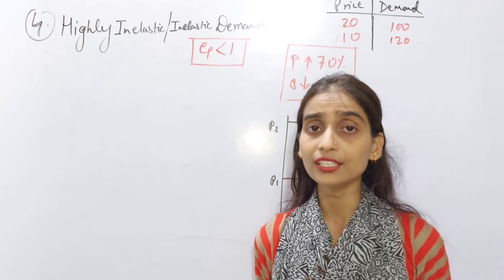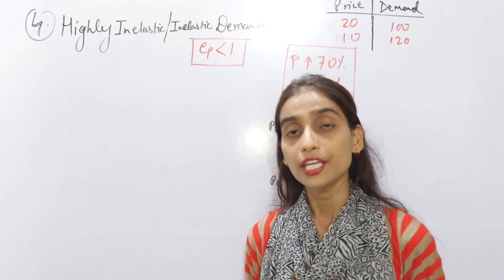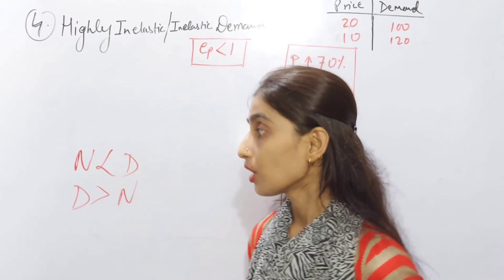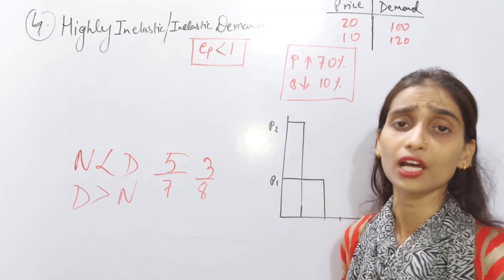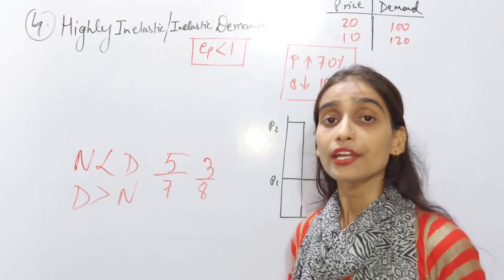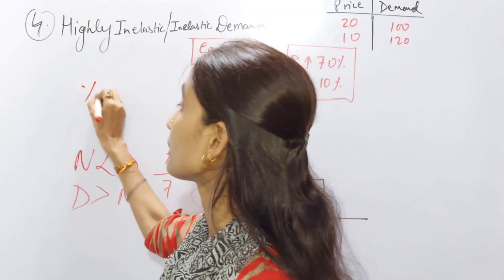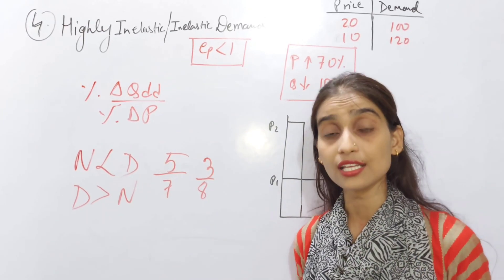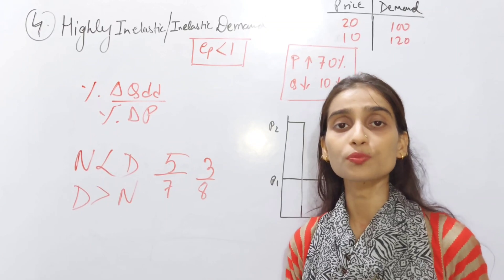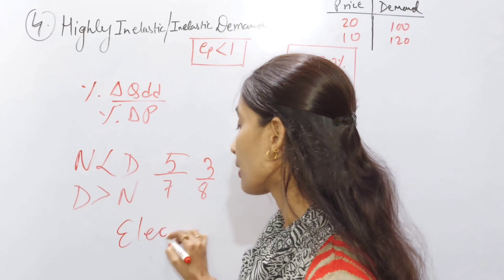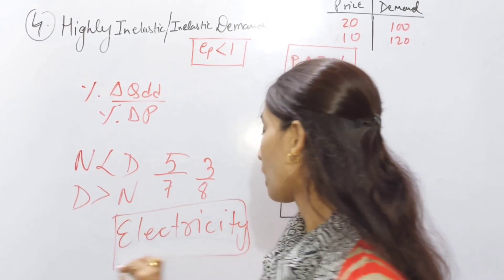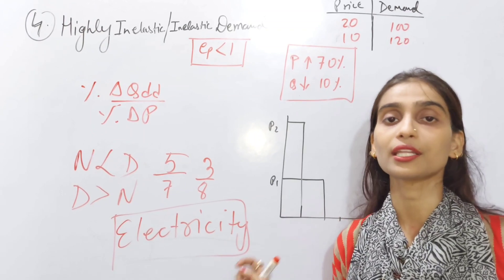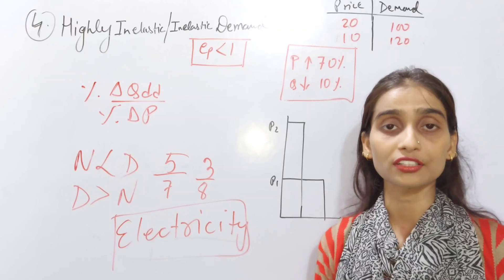The fourth one is highly inelastic demand, also called inelastic demand. In this case EP is less than 1. This happens when the numerator is lesser than the denominator — that is, when denominator is greater than numerator. Price fluctuates more and demand fluctuates less. This applies to necessities of life — for example, electricity. Even if electricity charges rise to 1000 per unit, you cannot stop using electricity completely.